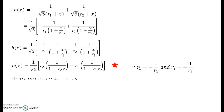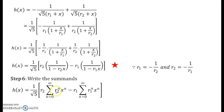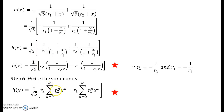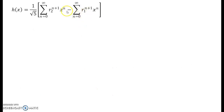So we can write their summations: the first bracket expands as the sum of r2 to the power n times x to the power n from n equals 0 to infinity, and the second as the sum of r1 to the power n times x to the power n from n equals 0 to infinity. Shifting r2 and r1 inside their respective summations gives r2 to the power n plus 1 times x to the power n, and r1 to the power n plus 1 times x to the power n.